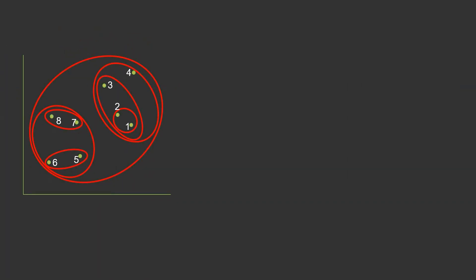In the previous intuition video, we first combined points one and two, then five and six, then three, then seven and eight, then one-two-three-four into a single cluster, then five-six-seven-eight into a single cluster, and finally all these points into a single cluster. Using this process, we'll now prepare the dendrogram.